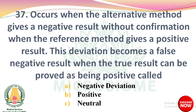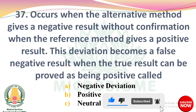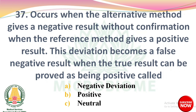Next question: It occurs when the alternative method gives a negative result without confirmation, when the reference method gives a positive result. This deviation becomes a false negative result when the true result can be proved as being positive. Options: negative deviation, positive, neutral. The right answer is option A: negative deviation.